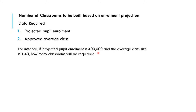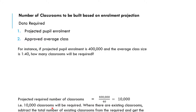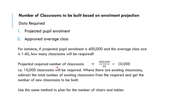We know the enrollment and we know the teacher-to-pupil ratio is 1:40. To get the total number of classrooms required, project the required number of classes: 400,000 divided by 40 gives 10,000 classrooms. No class should exceed 40 students. Where existing classrooms already exist, subtract those from 10,000 to find how many new ones are needed. Some existing classrooms may also require renovation, so factor that in as well.